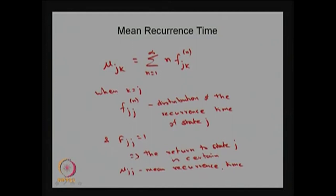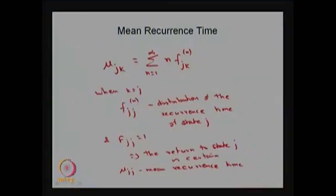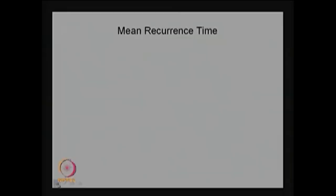We are considering the second case in which f_jj equals one — the return to state j whenever the system starts from state j is certain. The small f_jj(n) gives the distribution of the recurrence time, and our interest is also in the mean recurrence time, which can be calculated using μ_jj. As given earlier, μ_jj equals the sum of n times f_jj(n), so by knowing f_jj(n) you can find the mean recurrence time for state j.